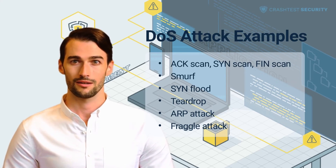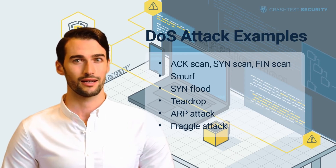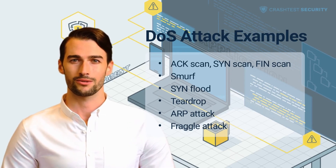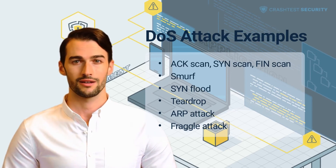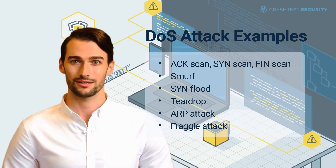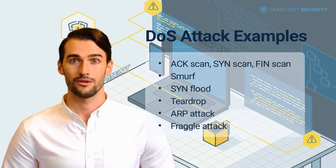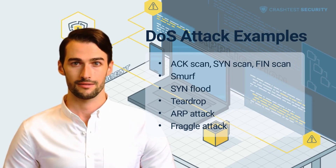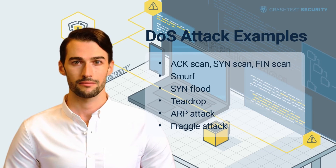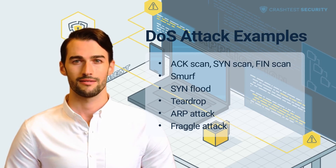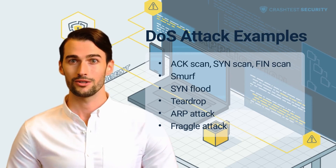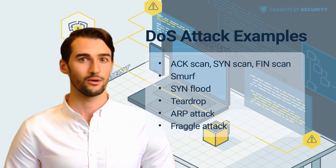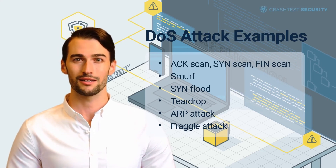The Fraggle attack, also known as a UDP flood, uses the same approach as the Smurf attack by exploiting a vulnerability associated with sending traffic to the IP broadcast address of the target. The main difference is that it uses User Datagram Protocol traffic to flood a router or server instead of ICMP. The effect is to spoof the IP address of the source of the request and then direct the traffic from the network back to the router, thereby flooding it. Both the Fraggle and the Smurf attack have largely been left behind as routers no longer forward packets sent to their broadcast address.